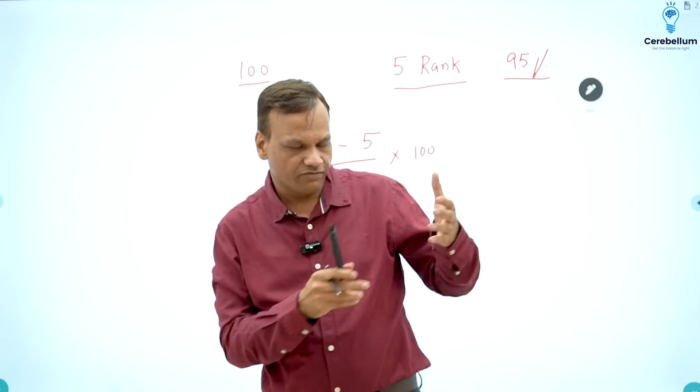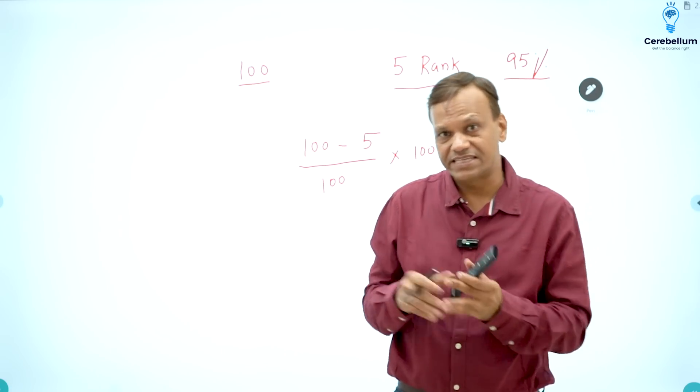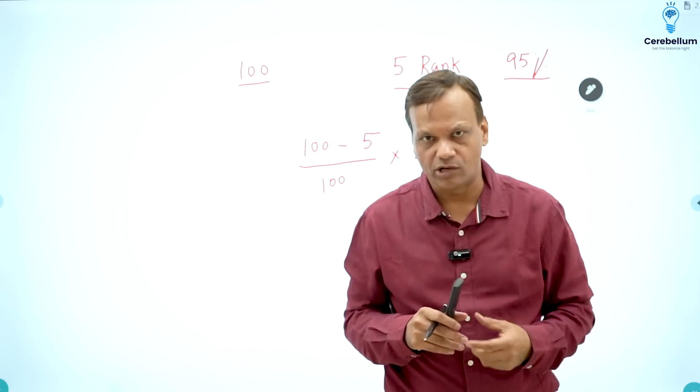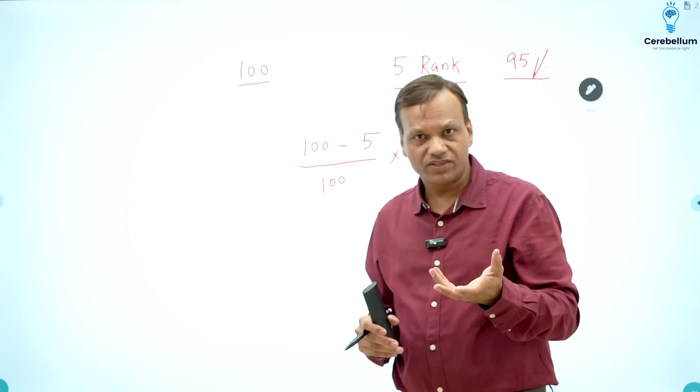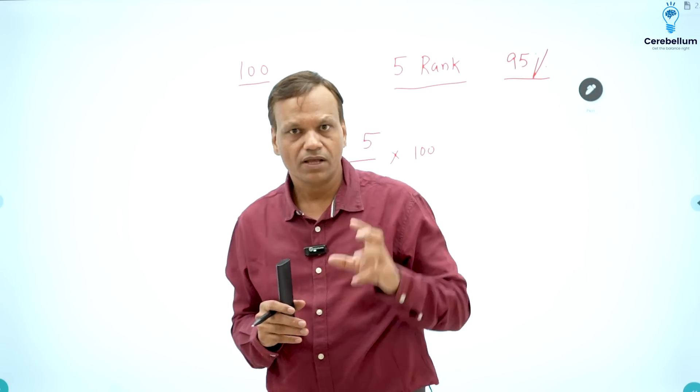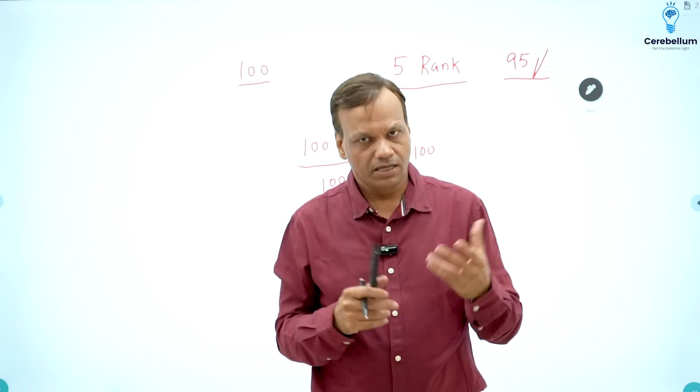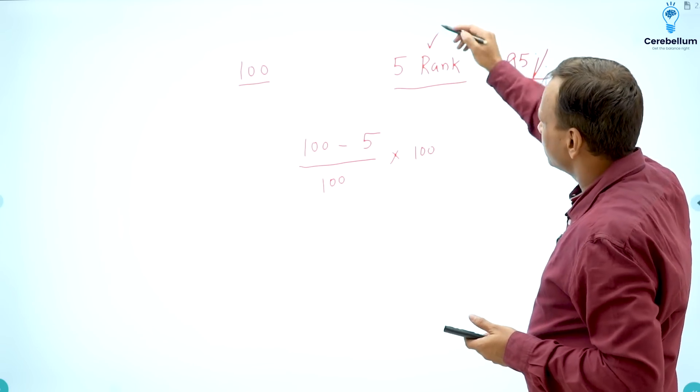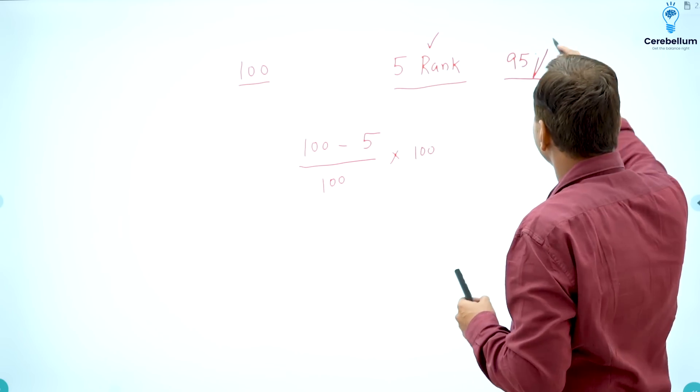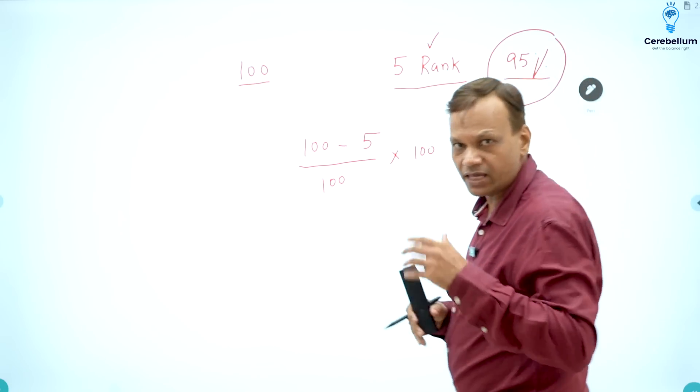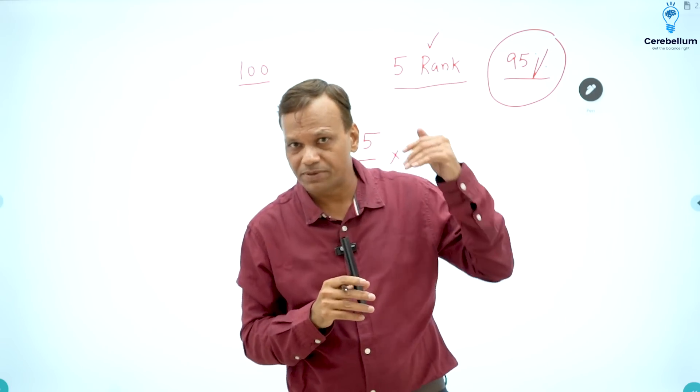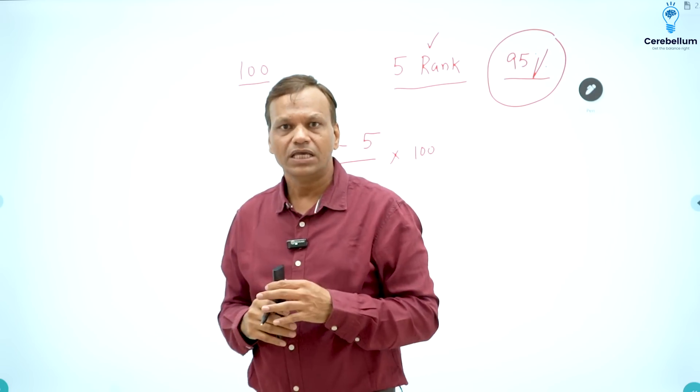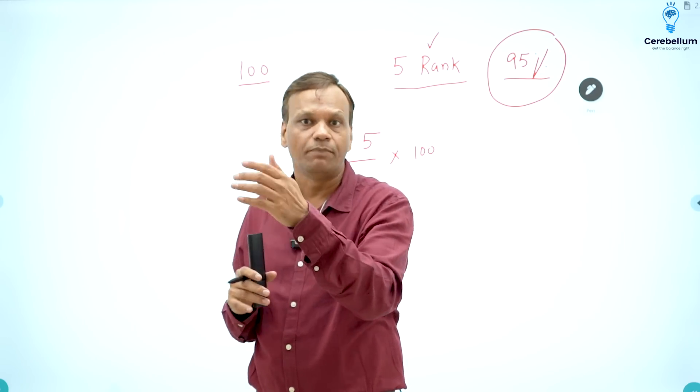So in NEET PG, there were two shifts. In the first shift, nearly 1 lakh students appeared. In the second shift, nearly 1 lakh students appeared. So number of students are almost equal, but not exactly equal. So the percentile will be different with the same rank in both the shifts. So the assumption made by the NEET PG people for giving ranks is, they will consider that if you are getting 95 percentile, it means 95 percent of the people are below you. So if the same set of students had appeared for the evening exam, even then 95 percent of the students would have been below you.